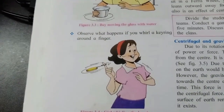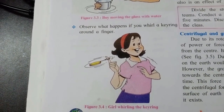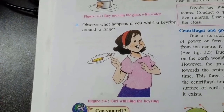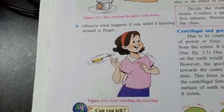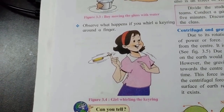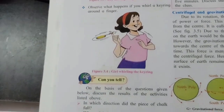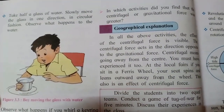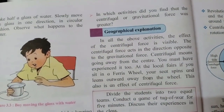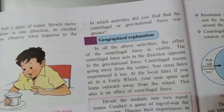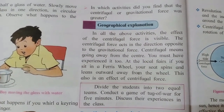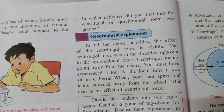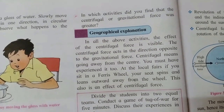Observe what happens if you whirl a key ring around a finger. A girl is shown rotating a key chain around her finger. In all the above activities, the effect of centrifugal force is visible. In each activity, some force is applied, and that applied force is known as centrifugal force. The explanation of centrifugal force follows.